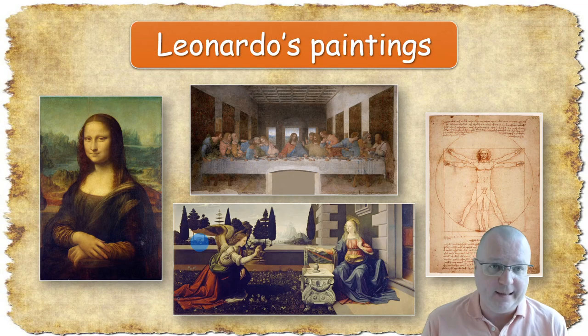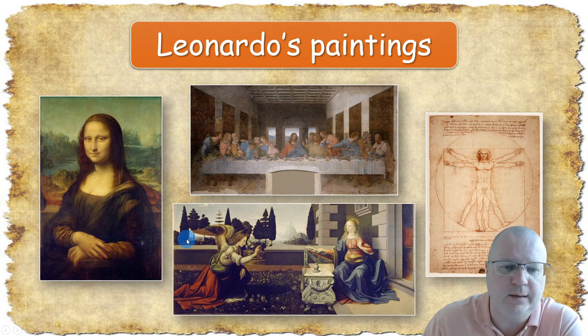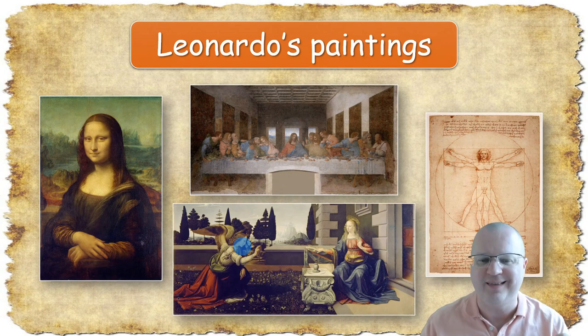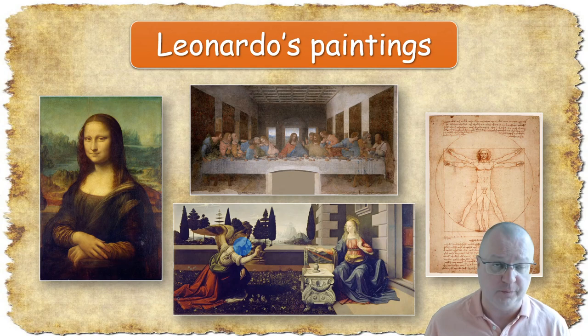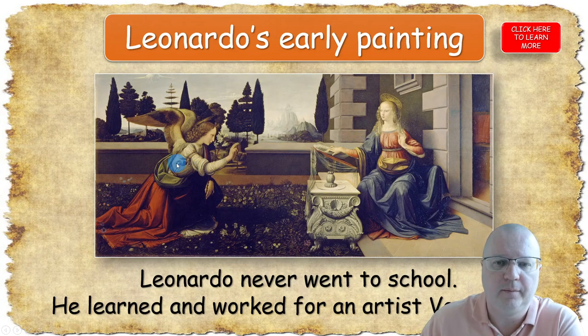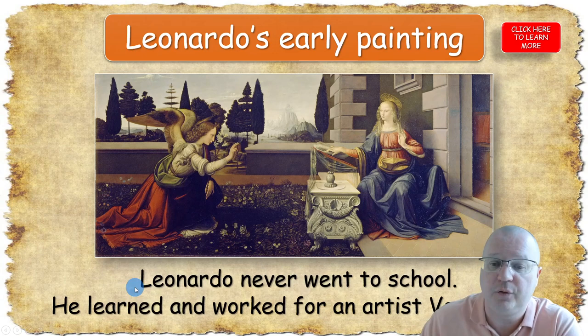Next slide: Leonardo's paintings. You can see four paintings — we're going to need the Mona Lisa and the Annunciation. Ask your students how they feel about these paintings or which one they like the most. Then go to the next slide — Leonardo's early painting, the Annunciation. This is one of his major early works. Here you can say that Leonardo never went to school — he learned and worked for an artist named Verrocchio.